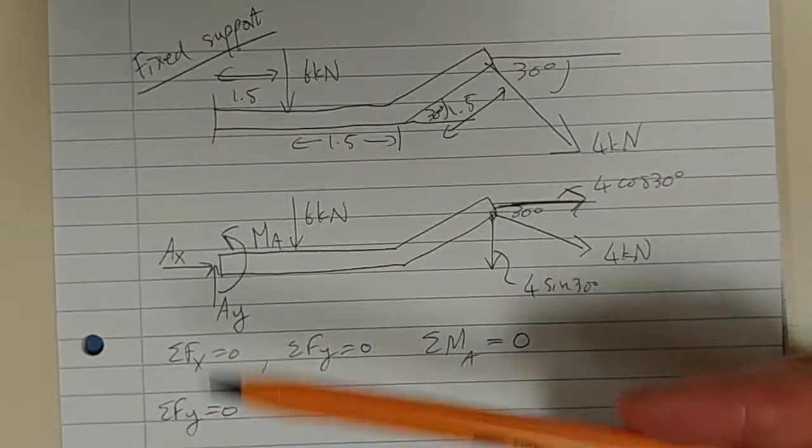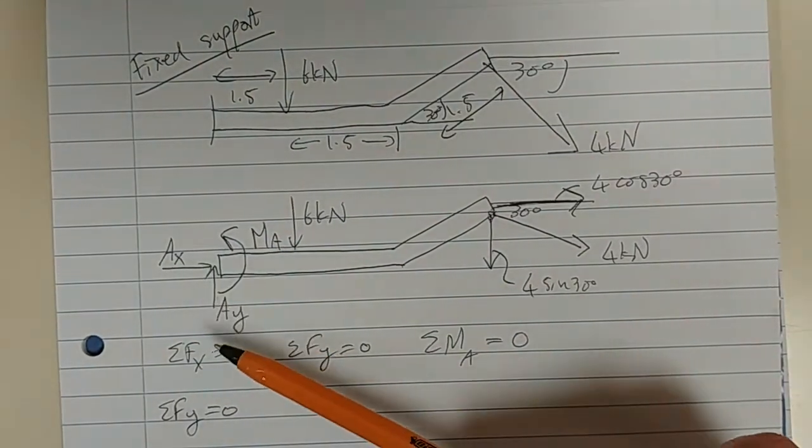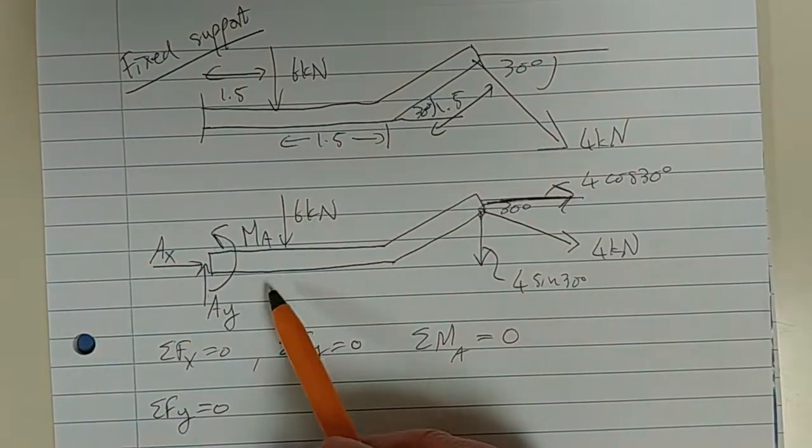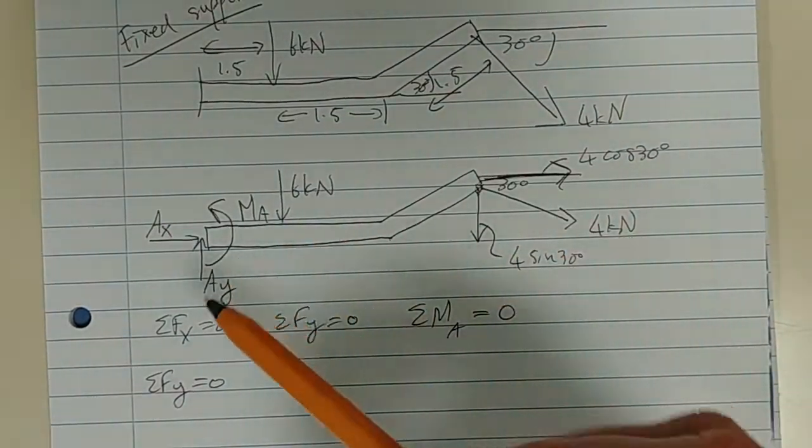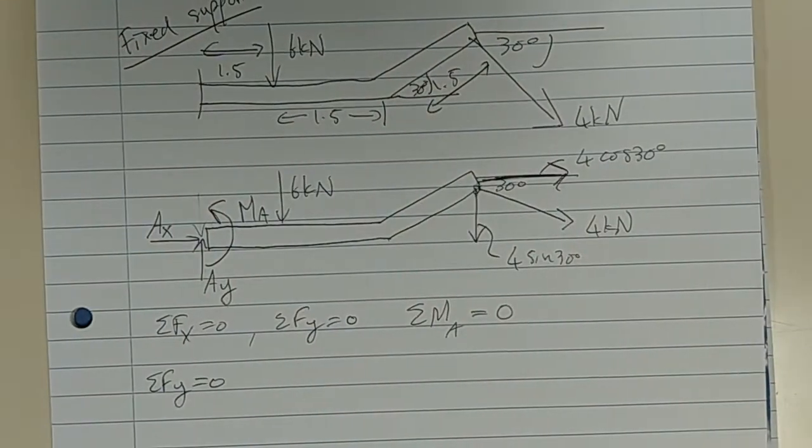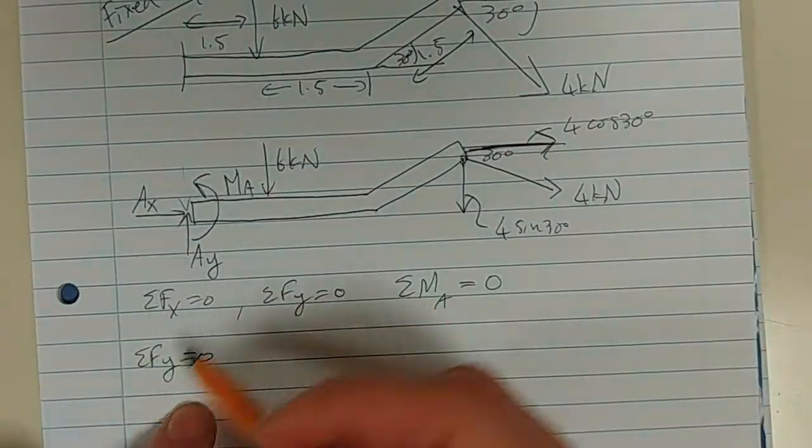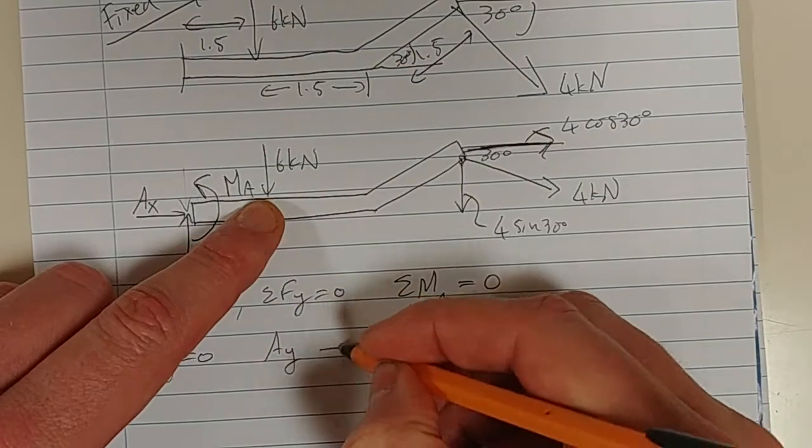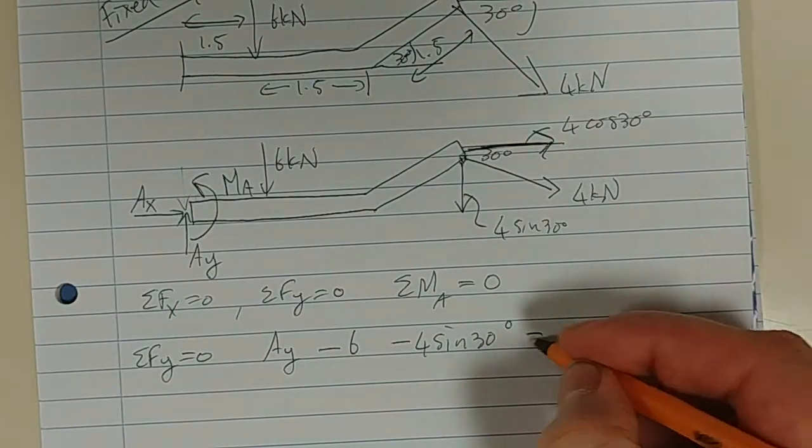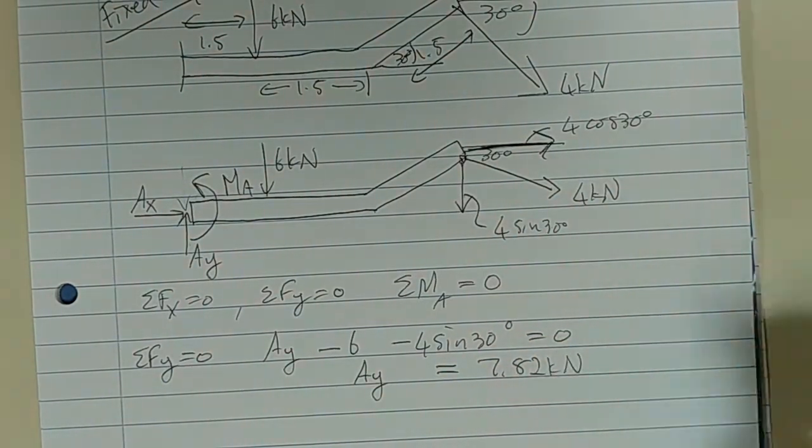So, what do you think Ay is going to be? In order to, remember, guys, this is a reaction. It's a support. It's a reaction. It is resisting motion. So, if these two forces want to bring this beam down, obviously, I need a reaction force that is opposite. So, just sometimes it's not easy to see. But, in this case, you can see that Ay must be acting up, right? So, if I put Ay down, then when I solve for Ay, I would get a negative, which means that arrow should actually be up. So, let's solve for Ay. We've got Ay here minus 6 minus 4 sine 30 equals 0. And you solve for Ay, I get 7.82 kN. I hope that's correct.